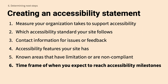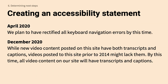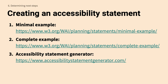Include timeframes for reaching accessibility milestones — for example, 'Videos posted prior to 2014 might lack captions, but by December 2020 all of them will.' The W3C has great resources including examples of minimal and complete accessibility statements. If you're not sure how to write one, go to accessibilitystatementgenerator.com — they walk you through an easy form, you type everything in, and it spits out a document you can copy and paste. Resources are available in the slides posted on the Drupal Camp New Jersey website.